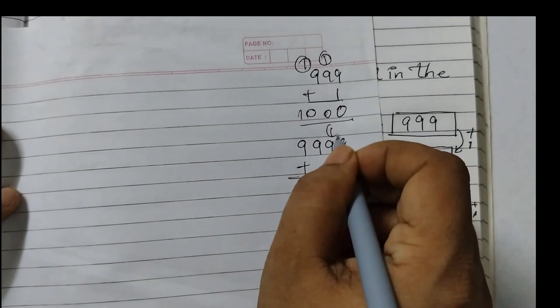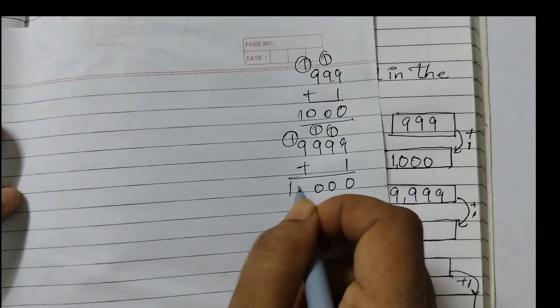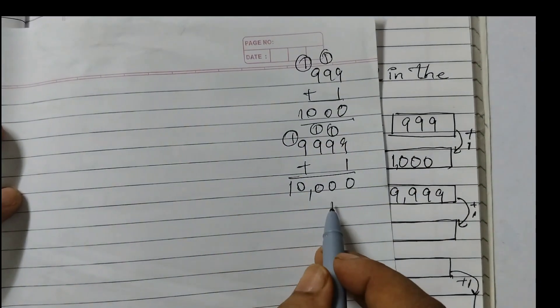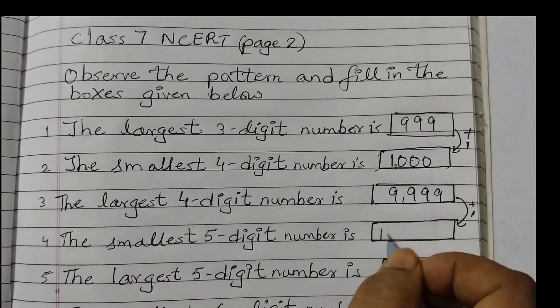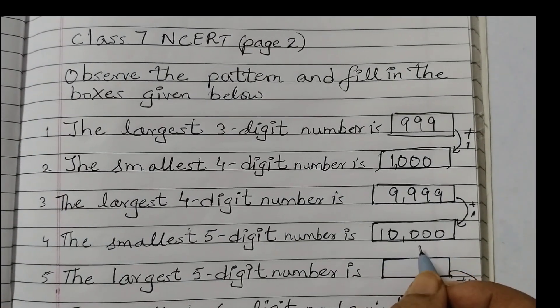So when we add 1, 9999, that is the largest 4 digit number, plus 1. 9 plus 1, 10, 10, 10. So we get 10,000. 1, 2, 3, 4, 5. 5 digit number.